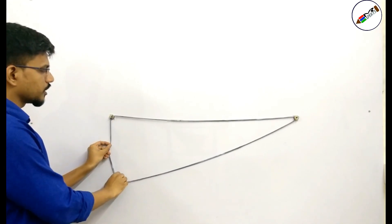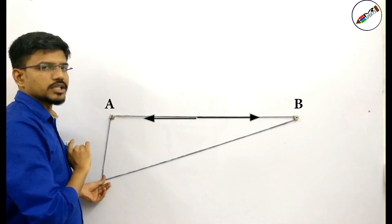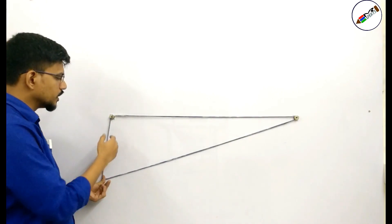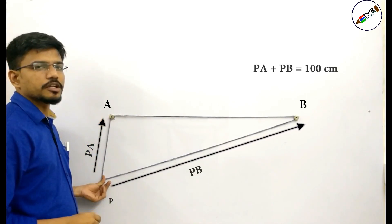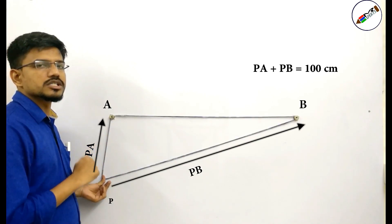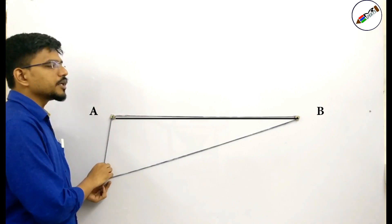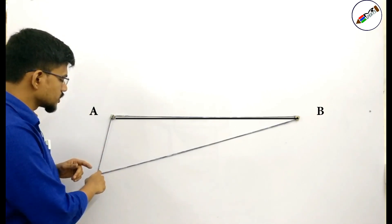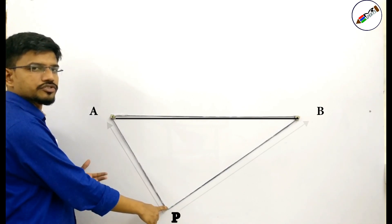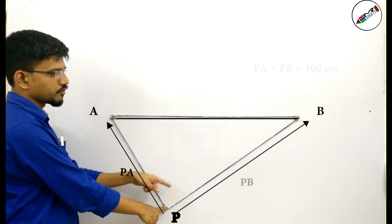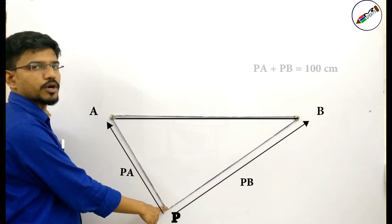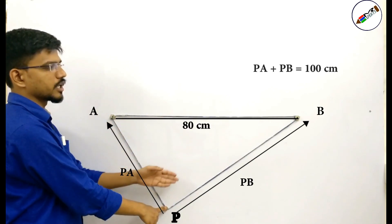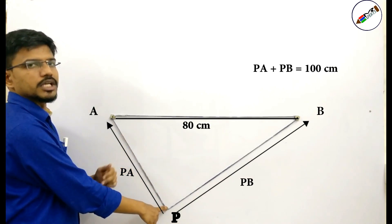As you can see, when I make the string taut, the distance between the 2 points is 80 centimetres, so the thread also spans a length of 80 centimetres. The remaining part of the thread will be 100 centimetres, because the total length of the thread was 180 centimetres. Now, this particular point is P. Its distance from point A will be PA and its distance from point B will be PB. As this length is 80, the remaining length is 100 — in short, PA plus PB is nothing but 100.